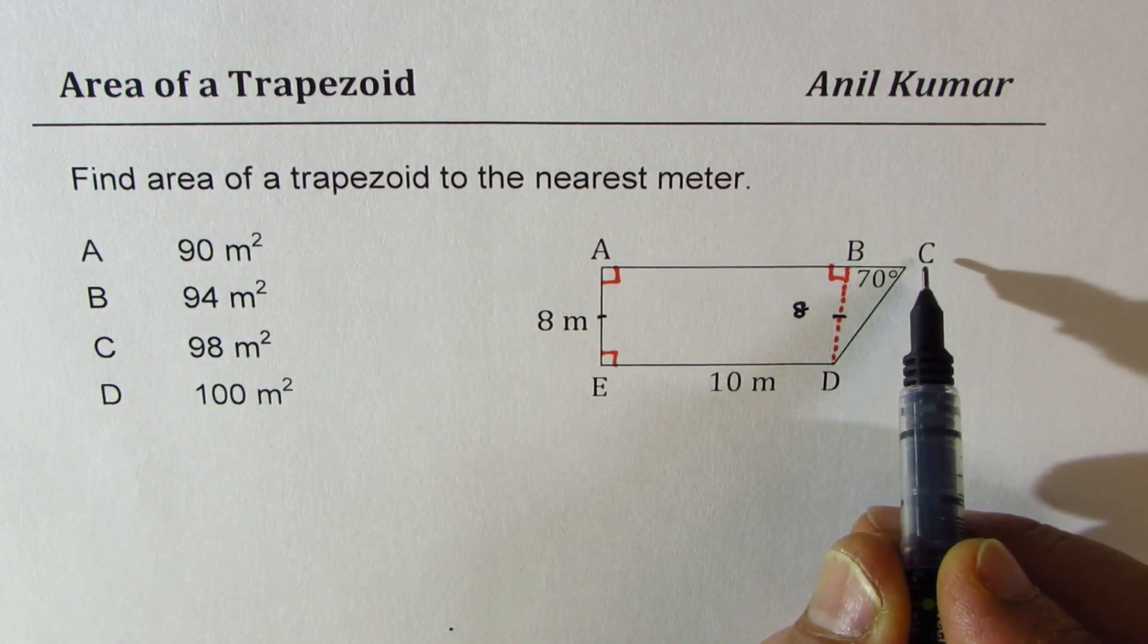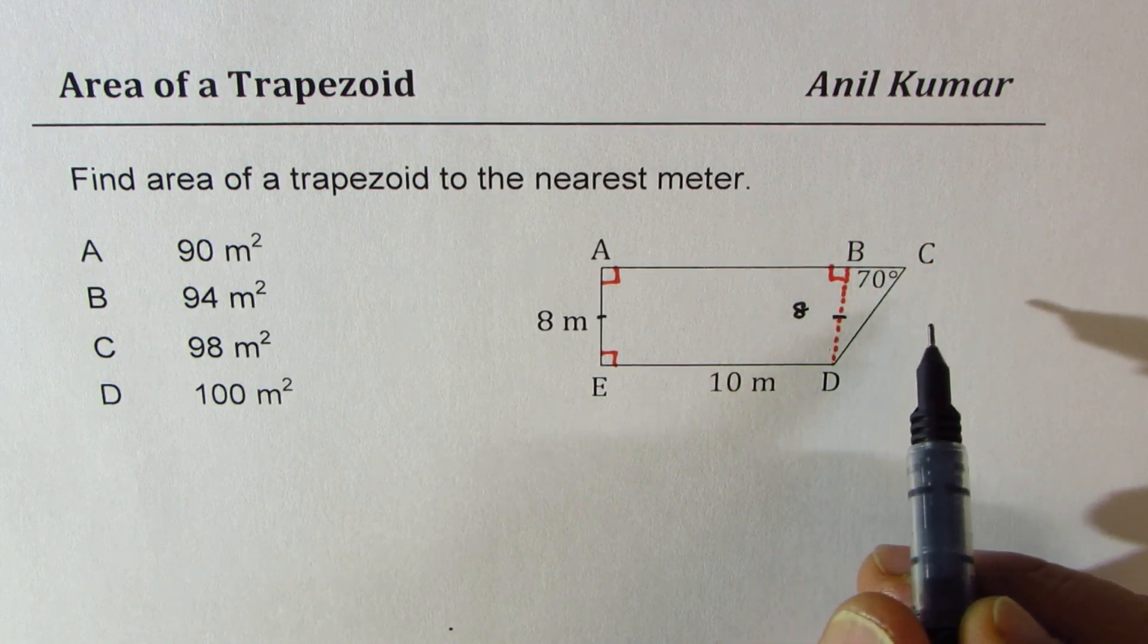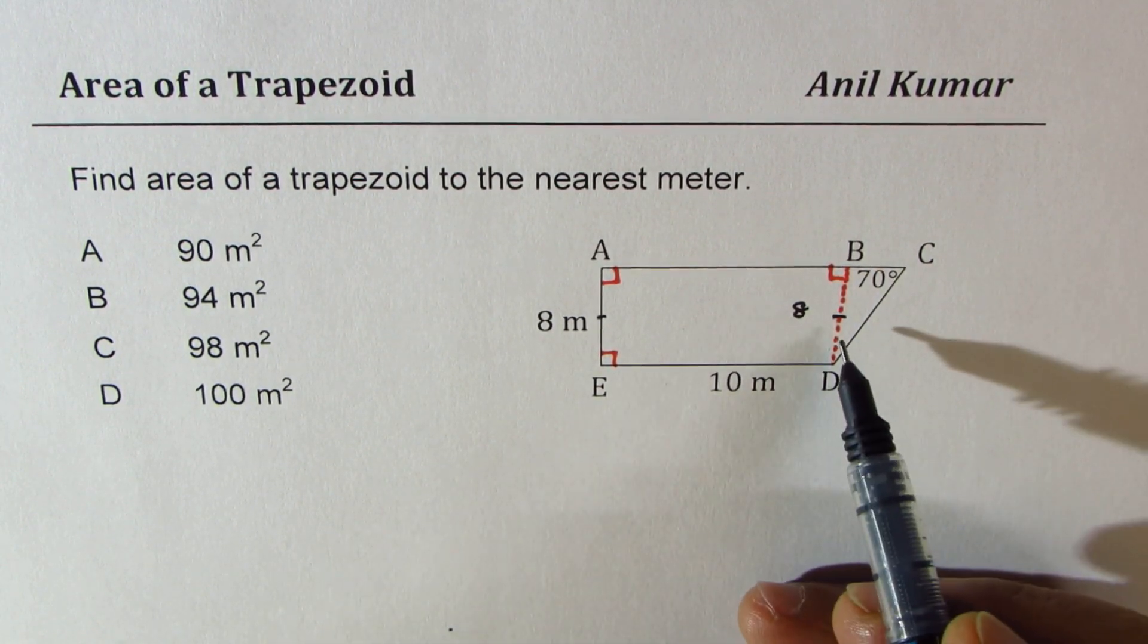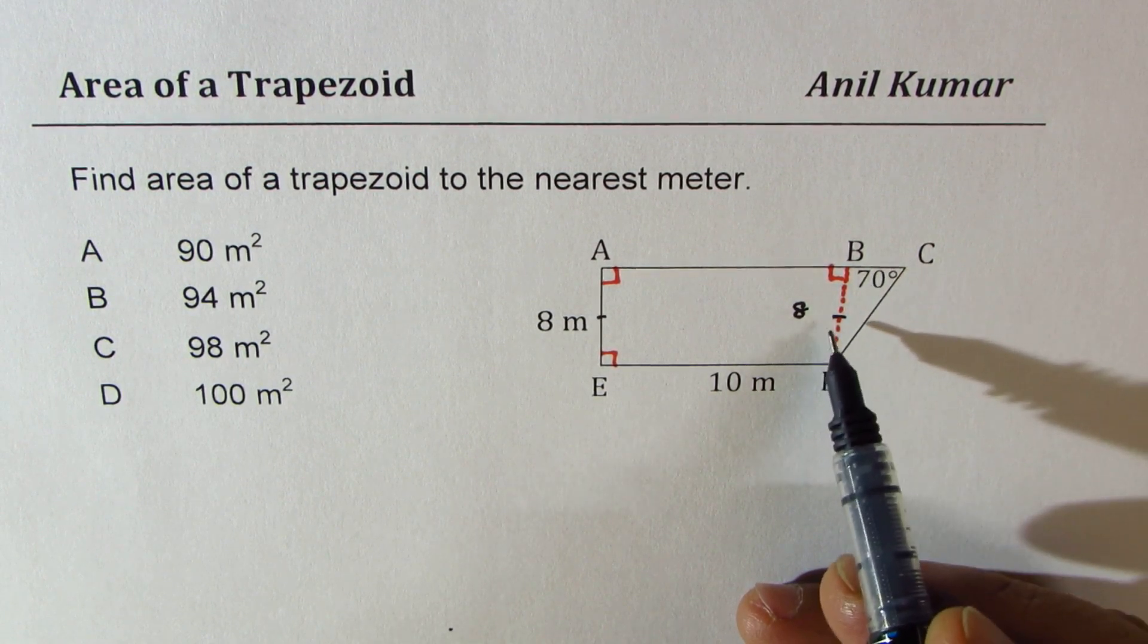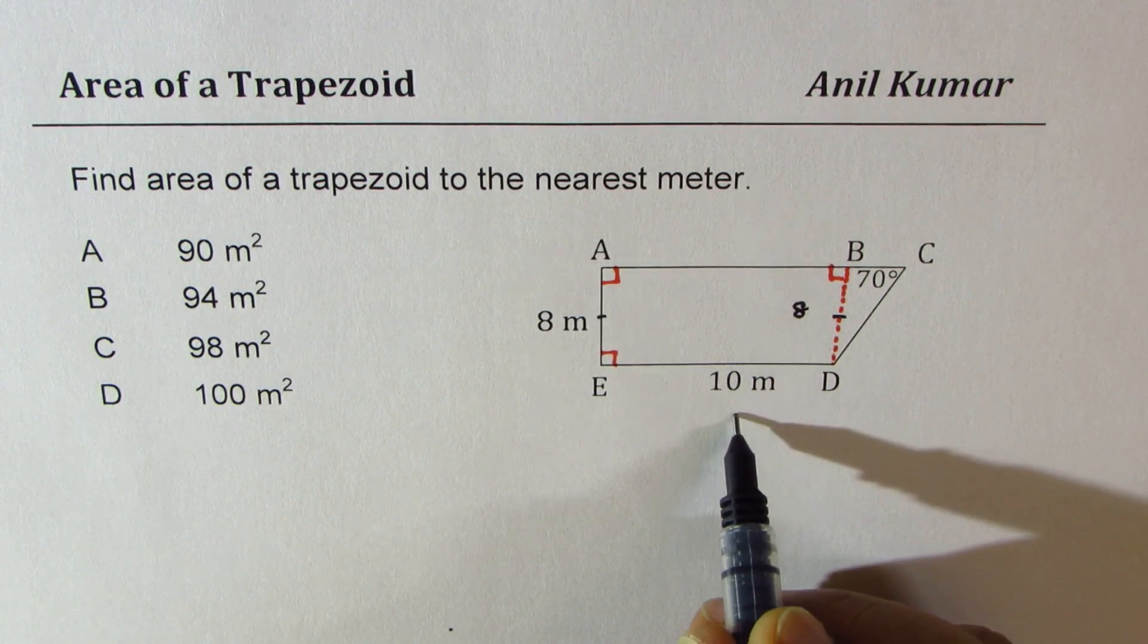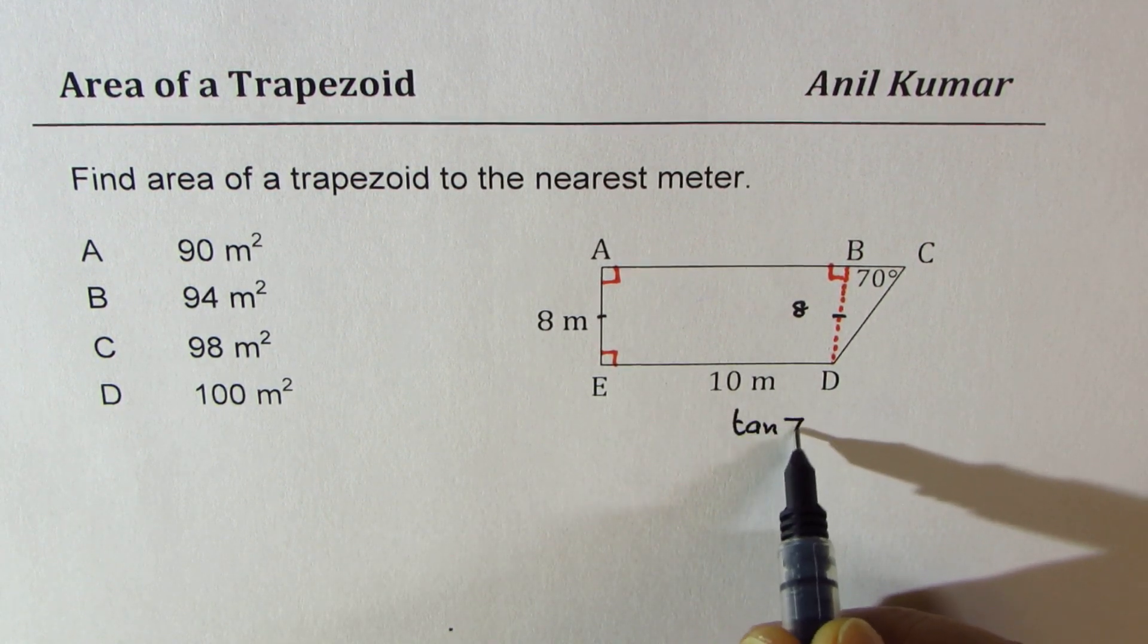So BC, the base of this triangle, can be calculated using trigonometric ratio. Since we know the height, we can use tan of 70 degrees. So we can write tan of 70 degrees.